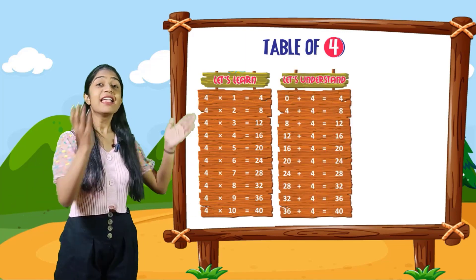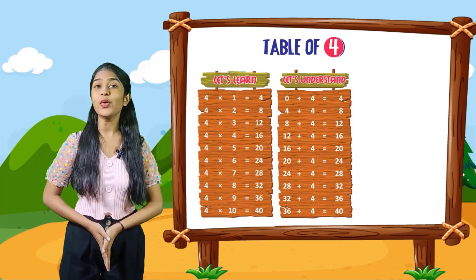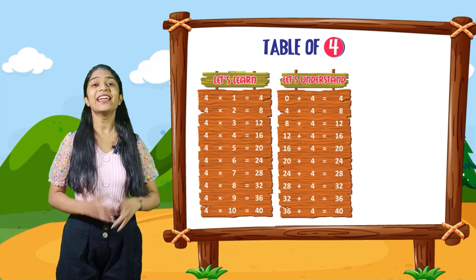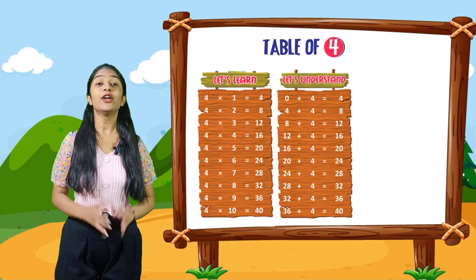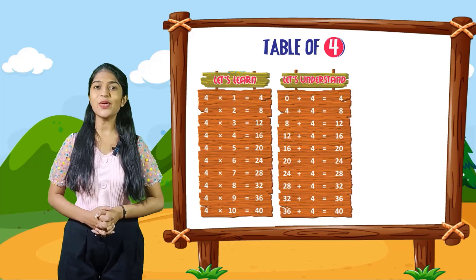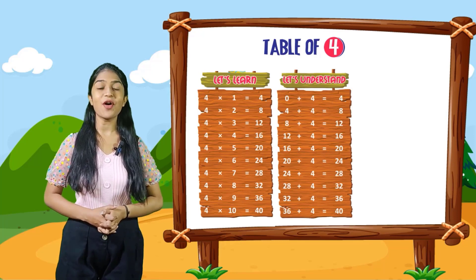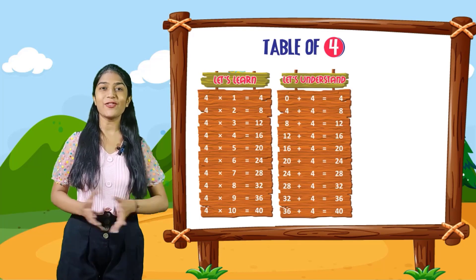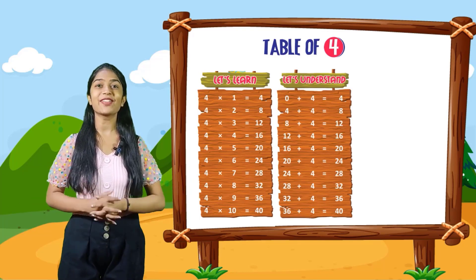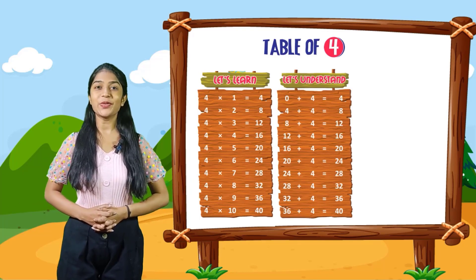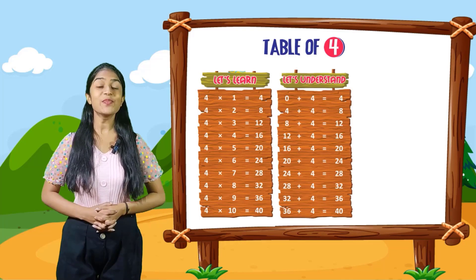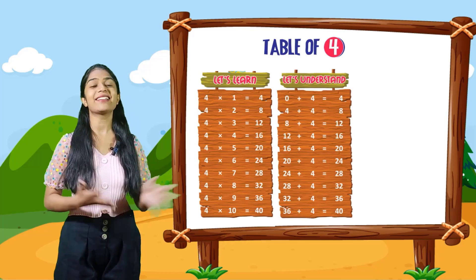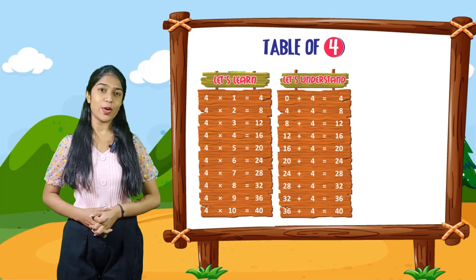So kids, now let's understand. 0 plus 4 is equal to 4. 4 plus 4 is equal to 8. 8 plus 4 is equal to 12. 12 plus 4 is equal to 16. 16 plus 4 is equal to 20. 20 plus 4 is equal to 24. 24 plus 4 is equal to 28. 28 plus 4 is equal to 32. 32 plus 4 is equal to 36. 36 plus 4 is equal to 40.